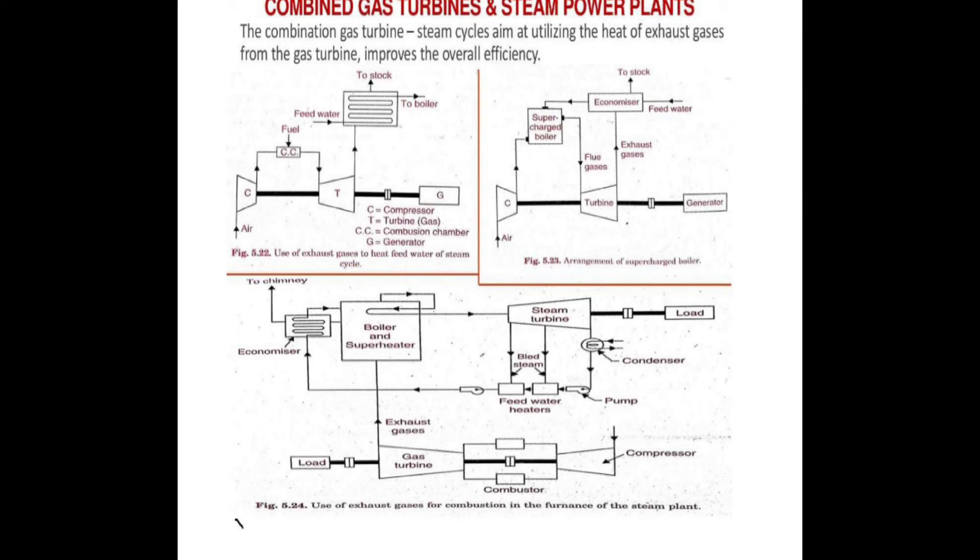So we combine two cycles: one power output is from the steam turbine power plant and the second power output is from the gas turbine power plant. This is how we combine gas turbines and steam turbine power plants.